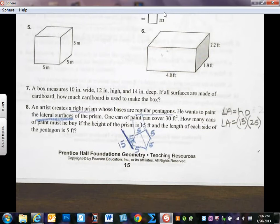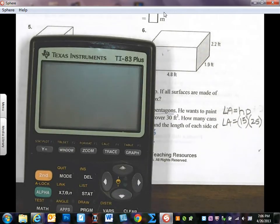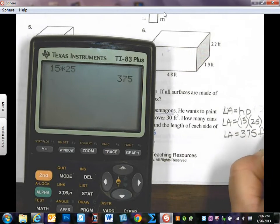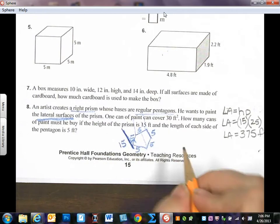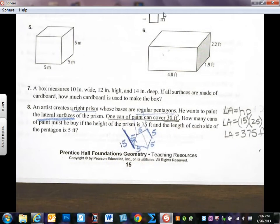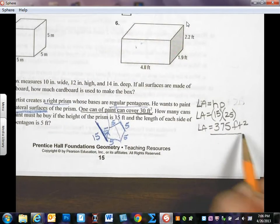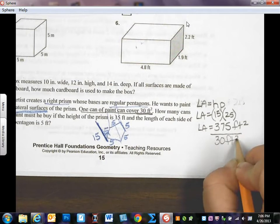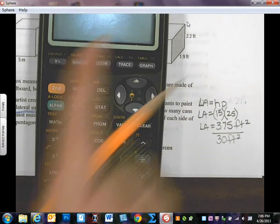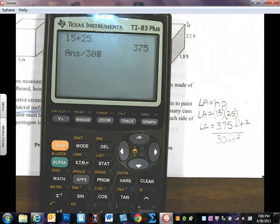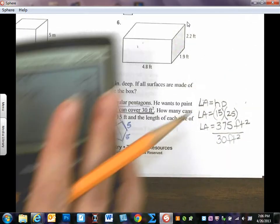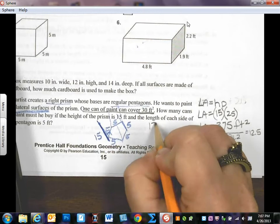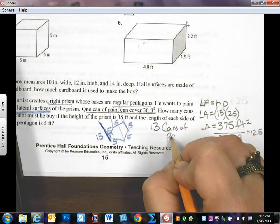Now, what is my lateral area? 15 times 25. So the lateral area is 375 feet squared. But it's not asking me for the lateral area. It wants to know how many cans of paint do I need. One can of paint covers 30 feet. So now I know how many total feet I have. I want to figure out how many 30 feet I've got. So I'm going to divide this by 30 feet squared. And it's going to give me how many cans of paint I need. So I take 375 and I divide it by 30. And I'm going to get 12 and a half. Well, can I buy a half a gallon of paint? No. So I'm going to have to round up. So this equals 12.5 cans.